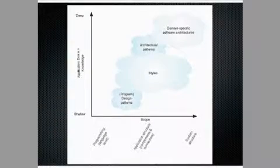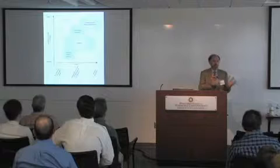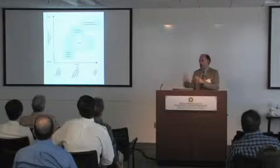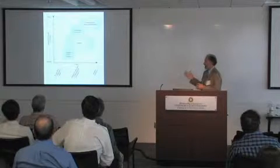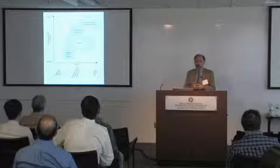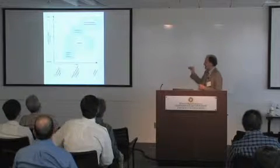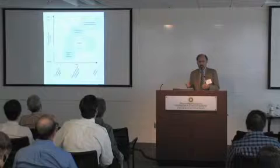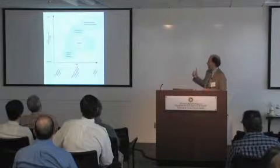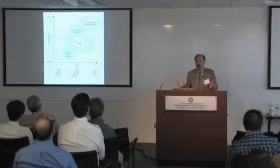To relate that word to other words current in the literature, I have a little diagram here. This is all the same concept — using things learned through hard experience in the past to solve problems in the future. It fits on a spectrum from design patterns in the lower left to architectural styles, to architectural patterns, and then to domain-specific software architectures in the upper right. The axes show the scope of the idea and how much application-specific knowledge is involved. When you get out to DSSAs, domain-specific software architectures, deep application domain knowledge is required, and these are decisions that govern entire system structure.